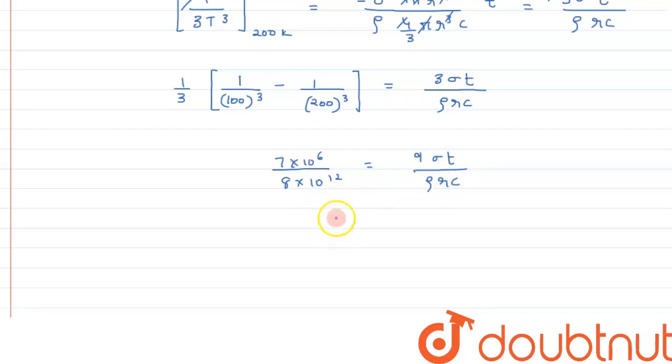Solving it further, we will get the answer as t equals (7/8)×10⁻⁶ times 1/(9σ) times ρrc. Solving this value, we get 0.09×10⁻⁶ ρrc/σ.